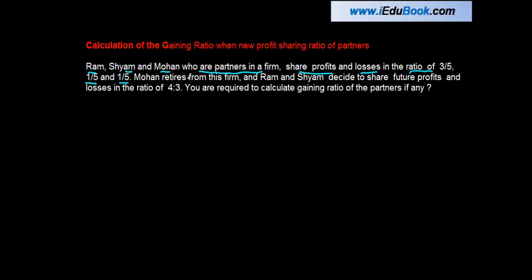Mohan retires from the firm and Ram and Sham decide to share future profits and losses in the ratio of 4:3. You are required to calculate the gaining ratio of the partners, if any.